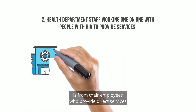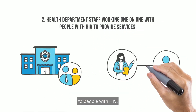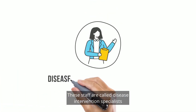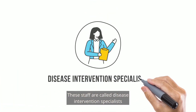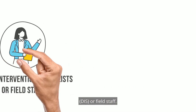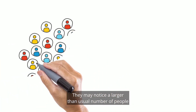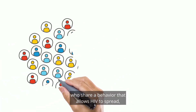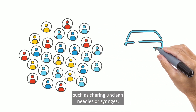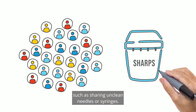Another way that health departments find out about HIV clusters is from their employees who provide direct services to people with HIV. These staff are called Disease Intervention Specialists, DIS, or field staff. They may notice a larger-than-usual number of people who share a behavior that allows HIV to spread, such as sharing unclean needles or syringes.